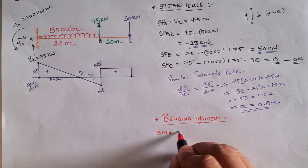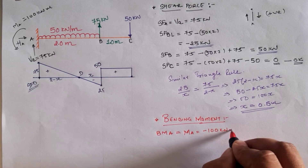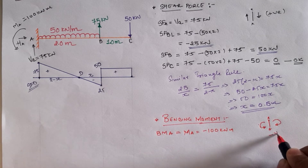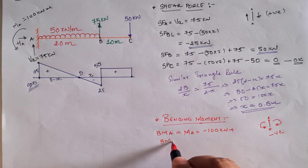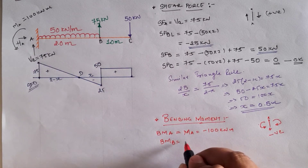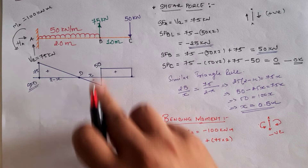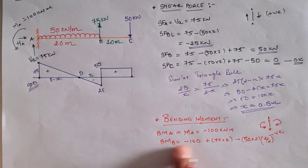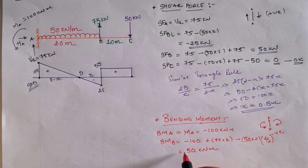Exactly at point A we have an anticlockwise moment MA. By sign convention, left-hand side anticlockwise is negative, so the bending moment at A is minus 100 kilonewton meter. At location B, taking the left-hand side, the moment is: minus 100 (MA) plus 75 × 2 clockwise (positive) minus the UDL moment of 50 × 2 × (2/2) anticlockwise (negative). Solving gives the bending moment at location B as minus 50 kilonewton meter.